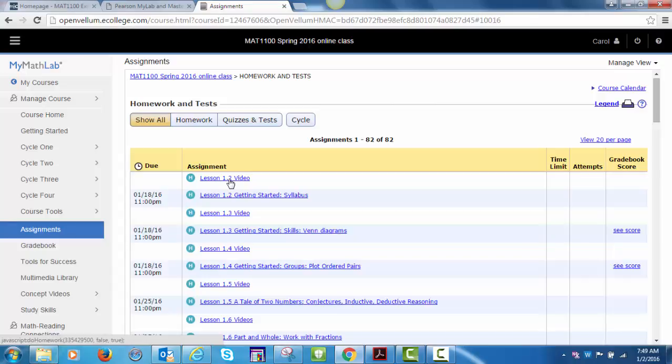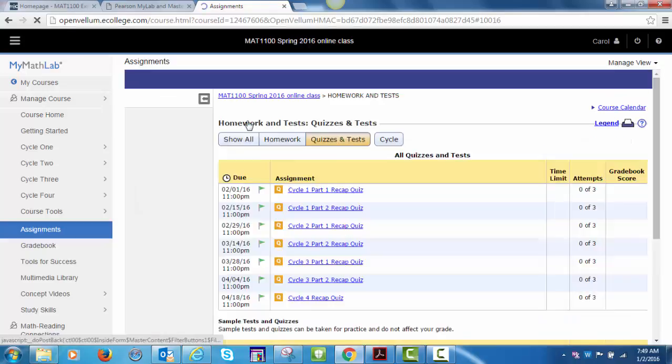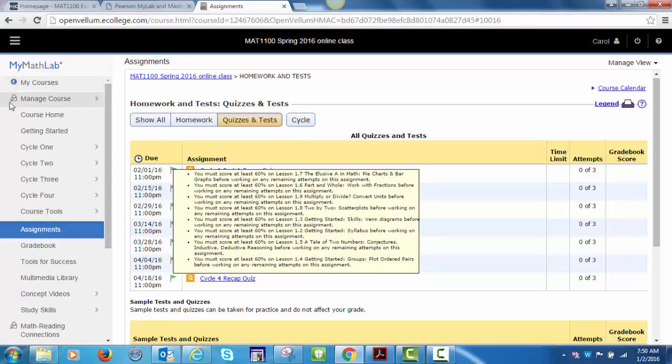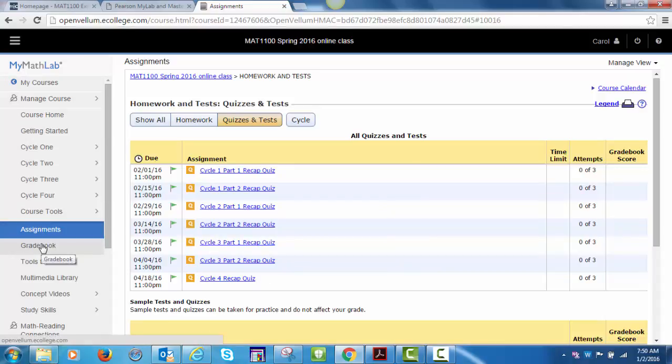On the assignment page, if you select quizzes and tests, you will see green flags next to the due date. Each of these assignments has requirements that must be met before the assignment is available. For Cycle 1 Part 1 Recap Quiz, you must score at least 60% on each homework before you can access the quiz. You have unlimited attempts for the MyMathLab homework, and you can access the homework after the due date if you have accessed it at least once before the due date. To access homework after the due date, click on Gradebook on the left toolbar, locate the assignment, and click on Review.